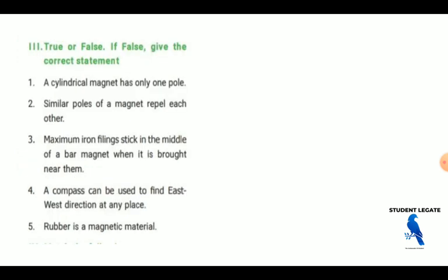True or false. The cylinder, a cylindrical magnet have one pole. No, false. What magnet are? It has two poles. Cylindrical magnet have two poles.